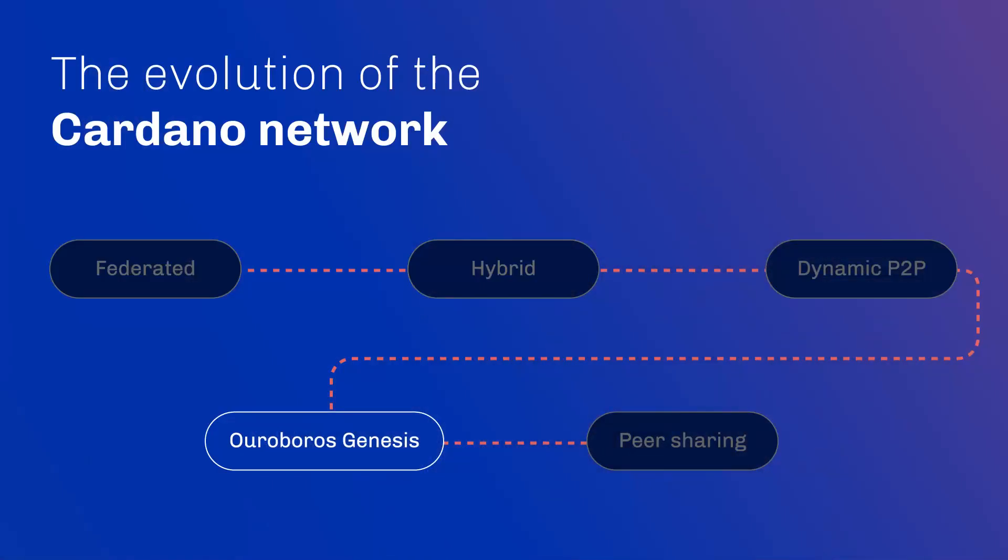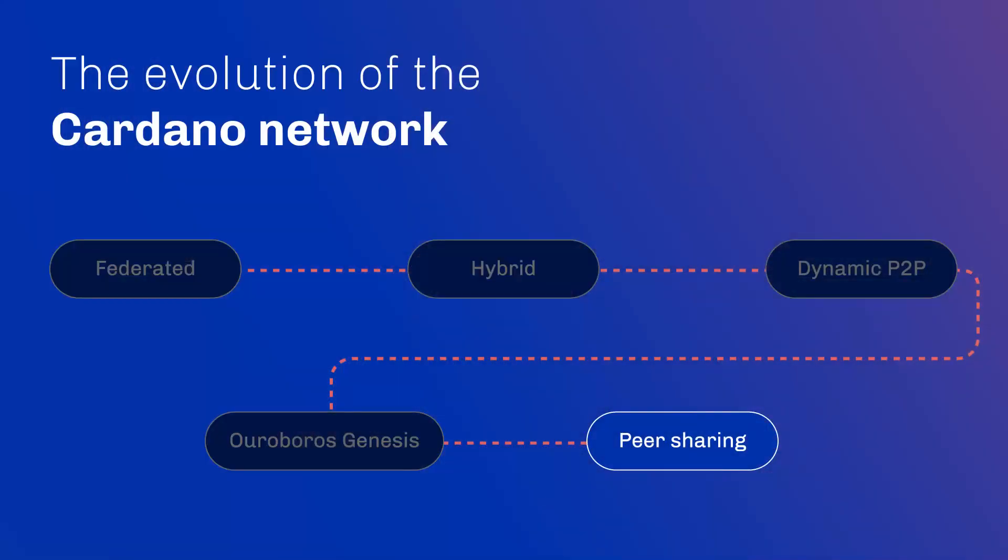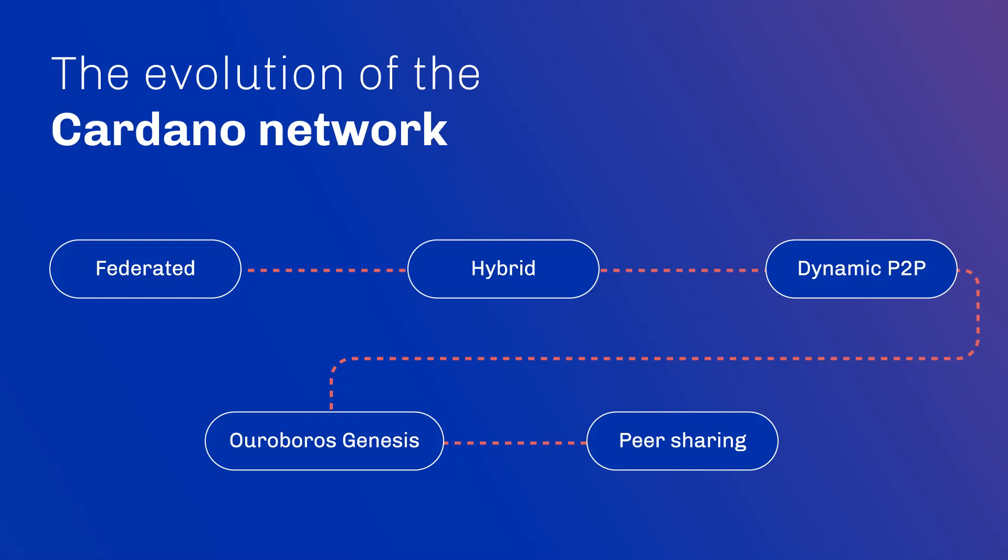Ouroboros Genesis provides a properly peer-reviewed, mathematically proven algorithm for securely being able to establish trust in the chain later on without needing any other trusted intermediaries. The dynamic peer-to-peer release gives us the mechanism for the peer-to-peer network, but the enabler to allow end users into that peer-to-peer network is Ouroboros Genesis. A final phase of the networking layer rollout is a feature called peer sharing, which means it's not just SPOs who can have relays in the network — anybody, not just SPOs, can provide their machines to act as relays.